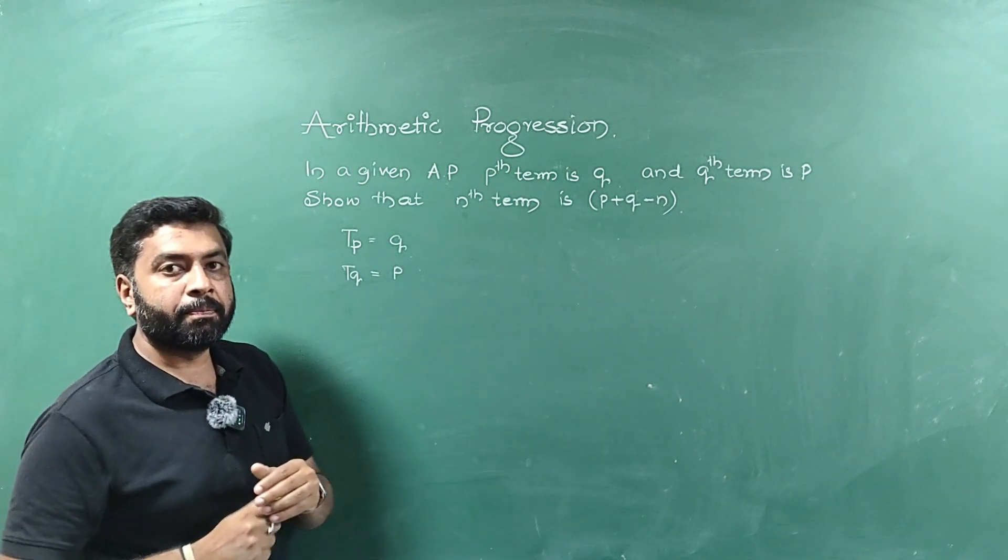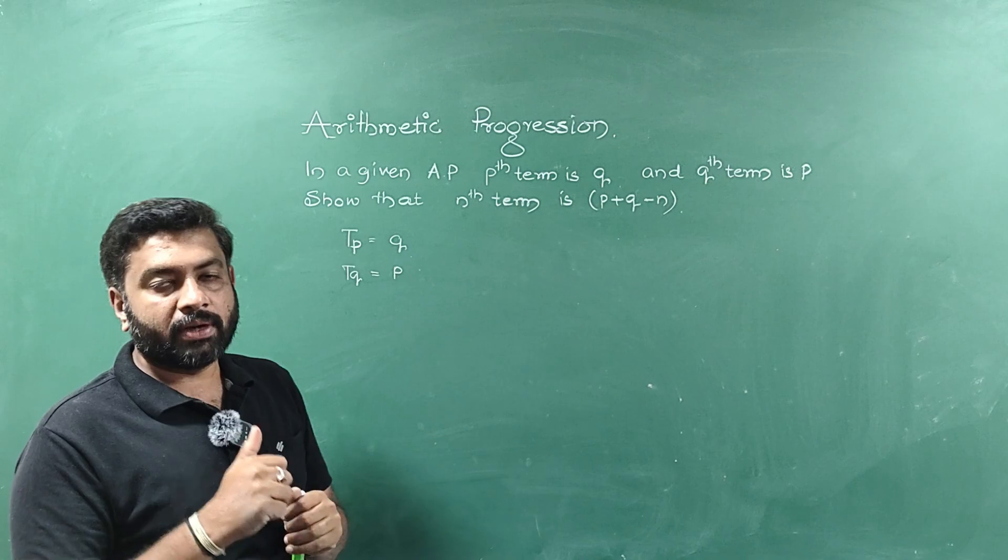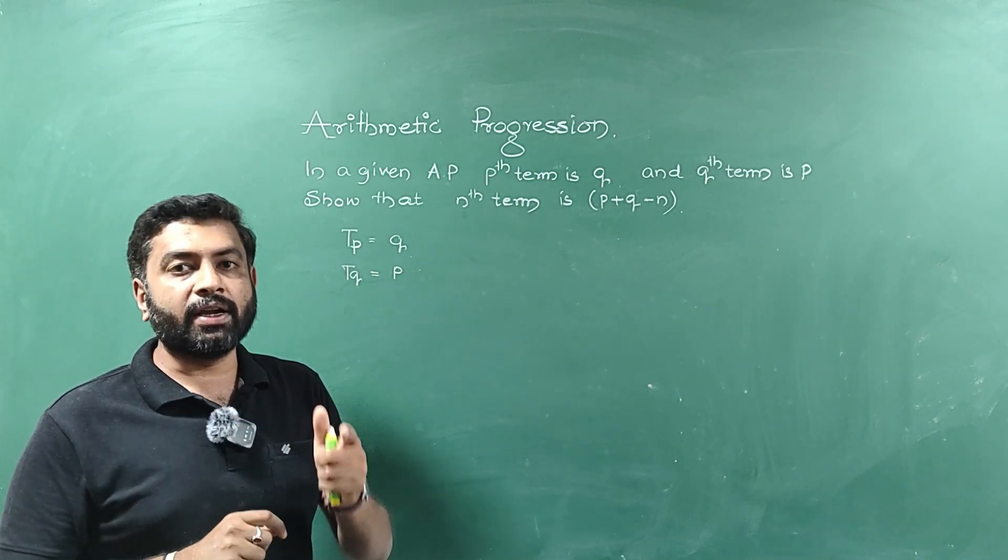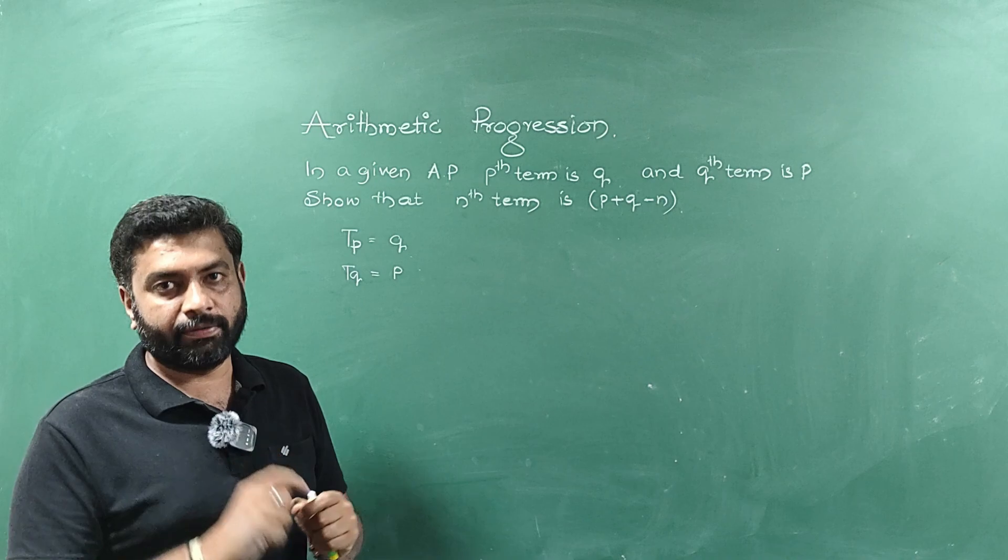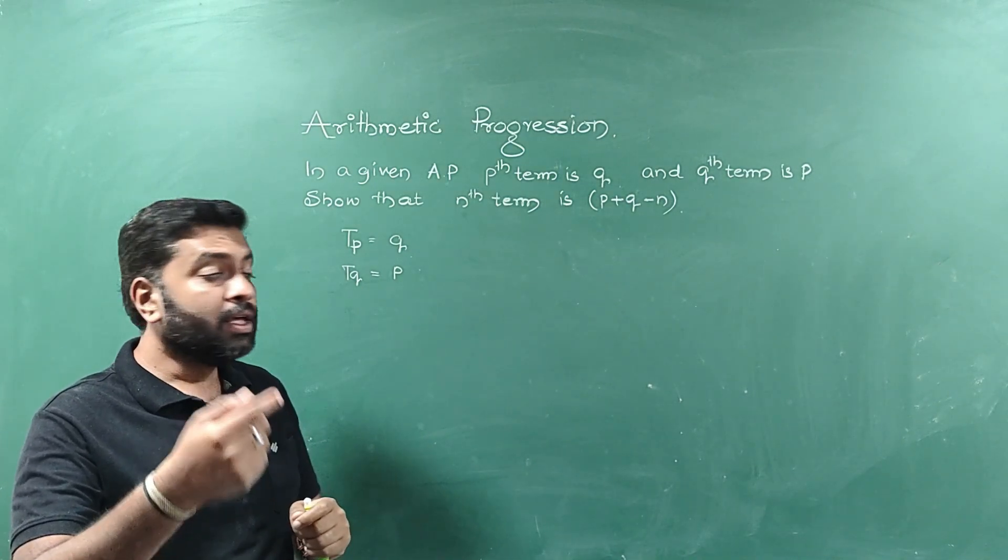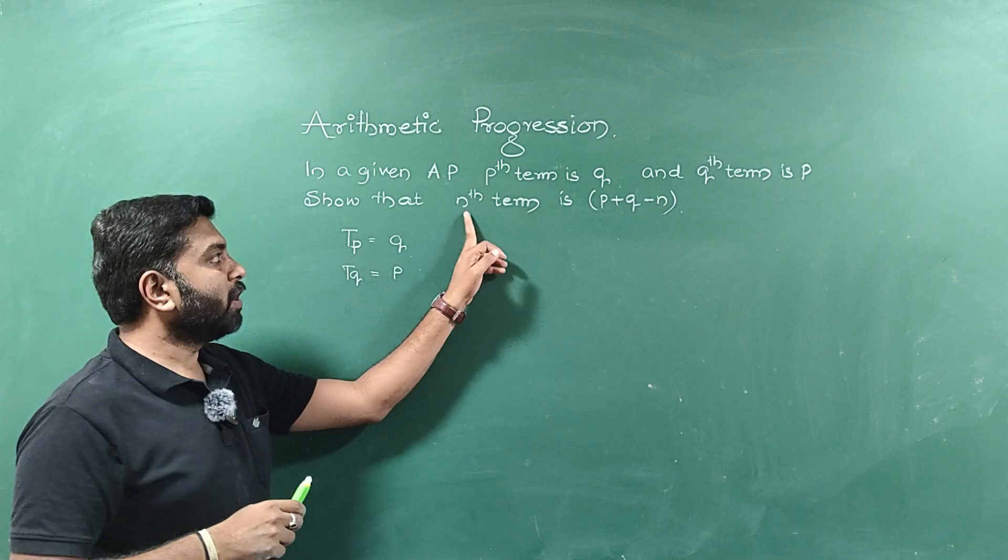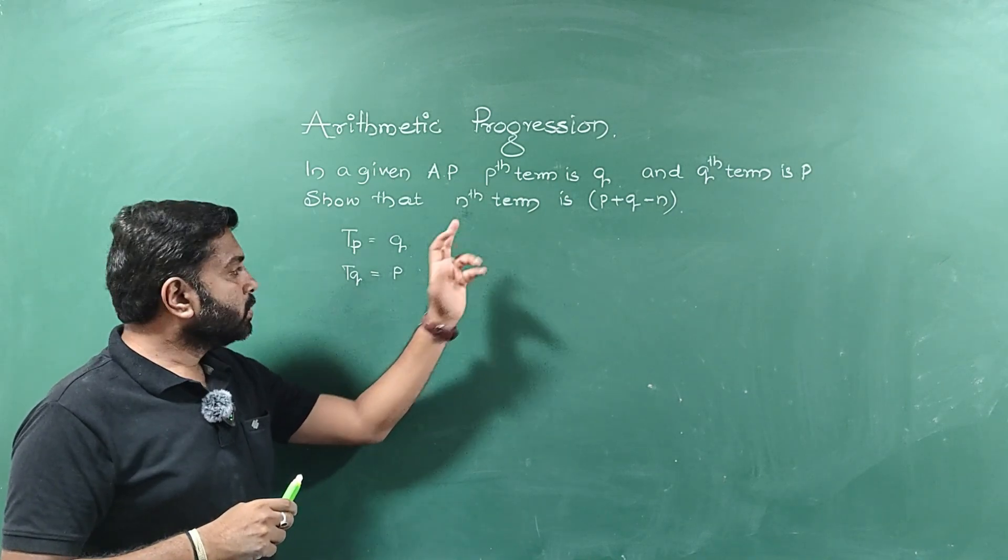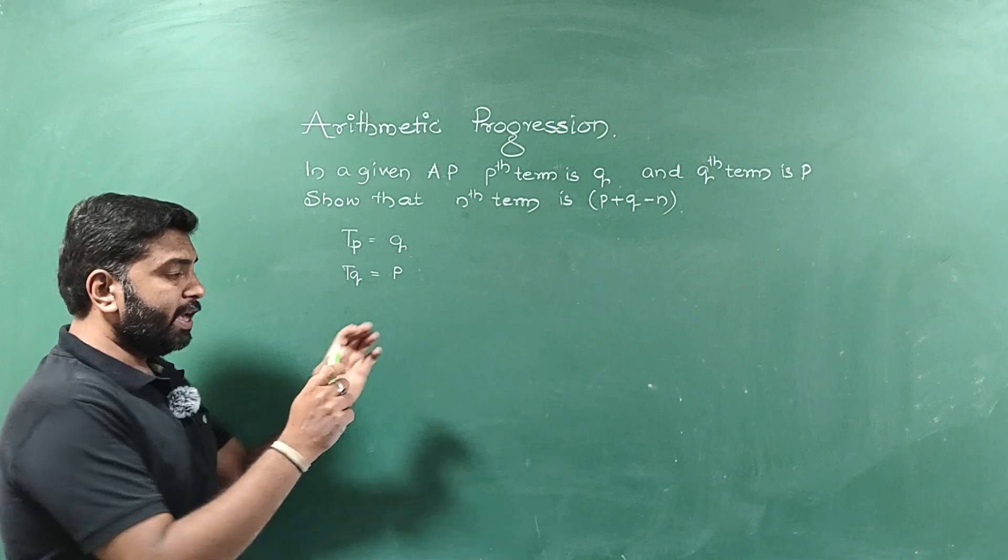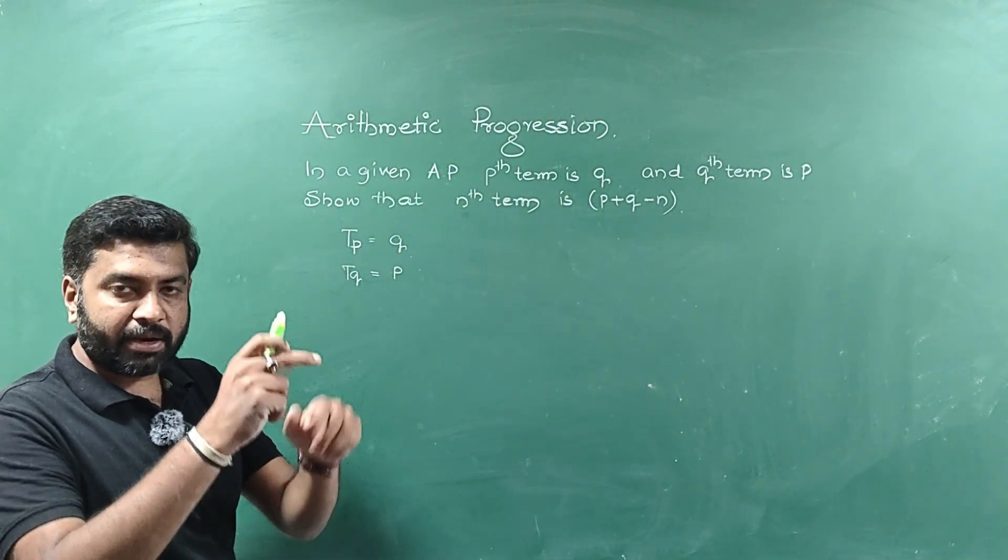Remember one thing. To find the nth term, I need two things. One is A means first term. Second one is D, that is common difference. First, I need to calculate the first term and common difference. Later, I need to calculate the value of n. So first, Tp, Pth term. We know An is nothing but A plus n minus 1 D.